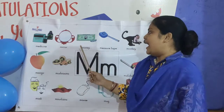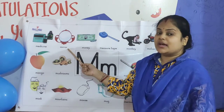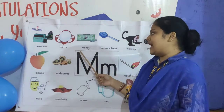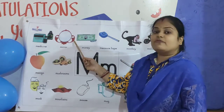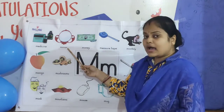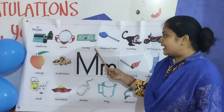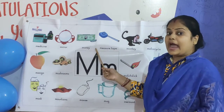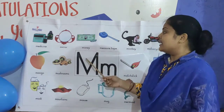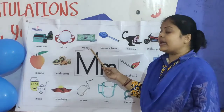And M for mirror. We use mirror to see our face in that. What is the spelling of mirror? M-I-R-R-O-R. Mirror. And M for money. We need money to buy things. What is the spelling of money? M-O-N-E-Y. Money.